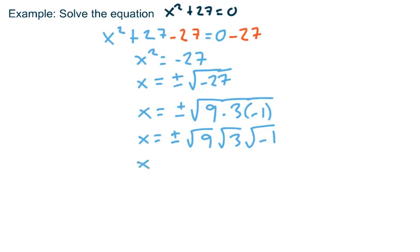And then I can see that that would simplify to 3 times the principal square root of 3. And what's the principal square root of negative 1? i. Remember that we usually put the i in front of the radical. That's just to make sure we don't misunderstand that the radical does not go over the i.